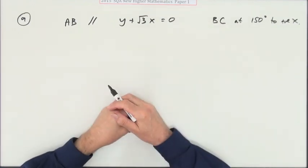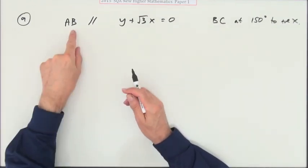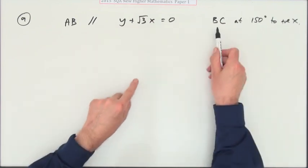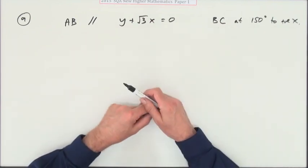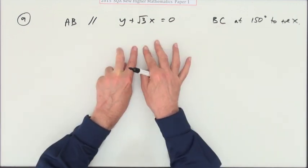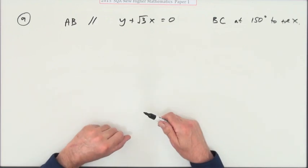Number 9 from Paper 1. It gives you the information: AB is parallel to this line, and BC is at this angle to the positive x-axis. Could A, B, and C—in other words, could these two line segments join together to make a straight line?